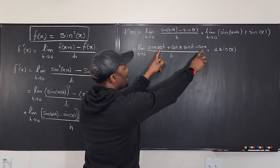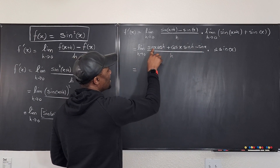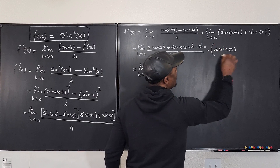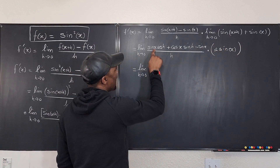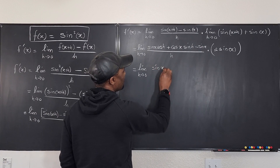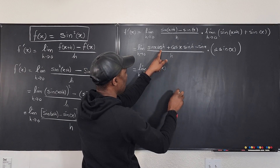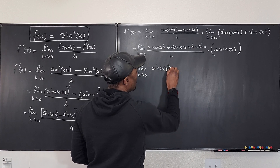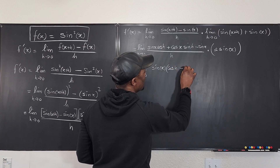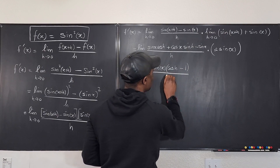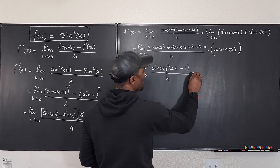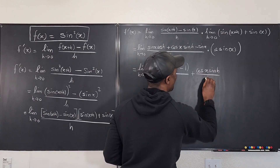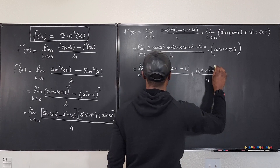We're going to put the sine x terms together. Since we have sine x here and sine x there, we factor out sine x, getting sine x times (cosine h minus 1), divided by h, plus cosine x times sine h over h. All of this is then multiplied by two sine x.